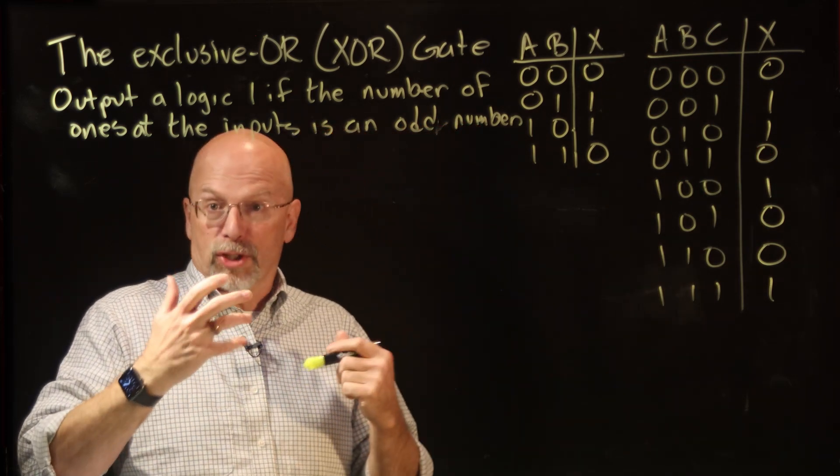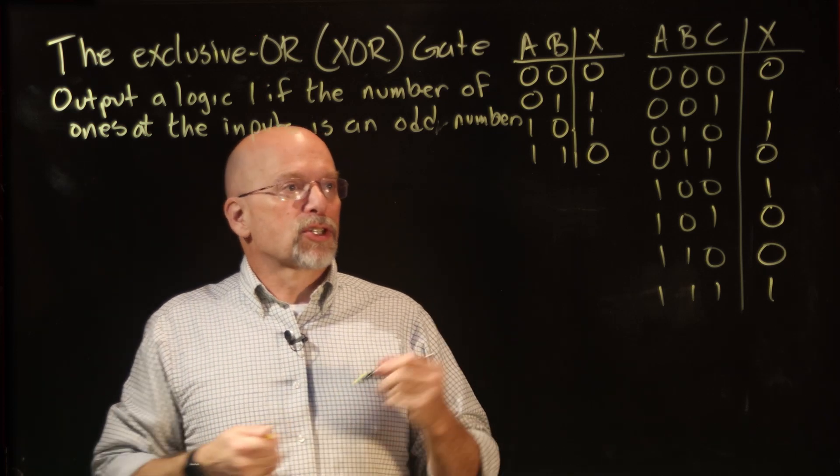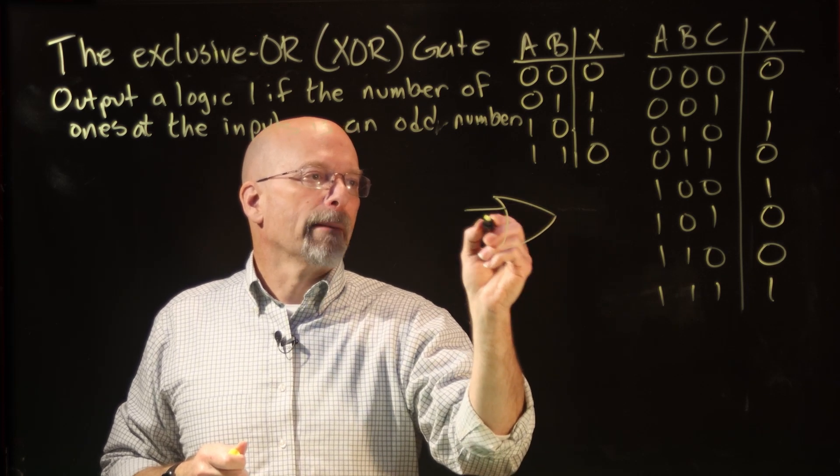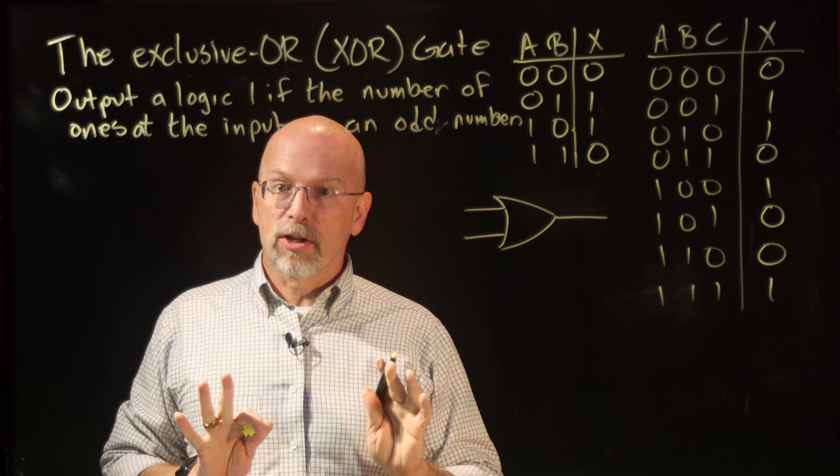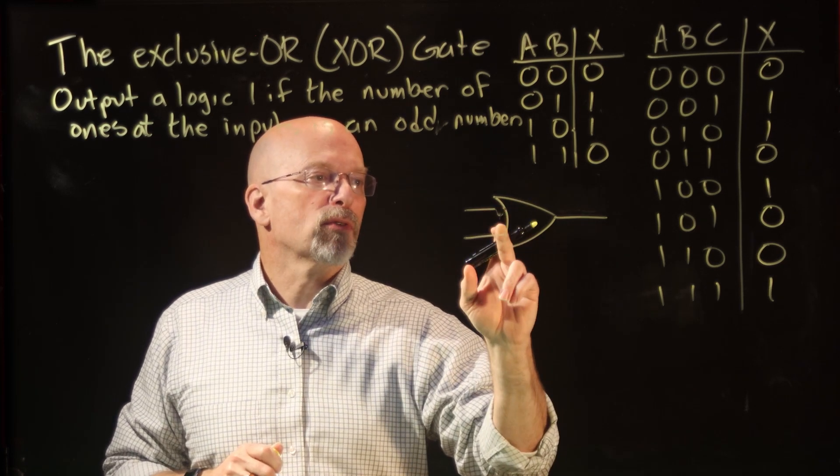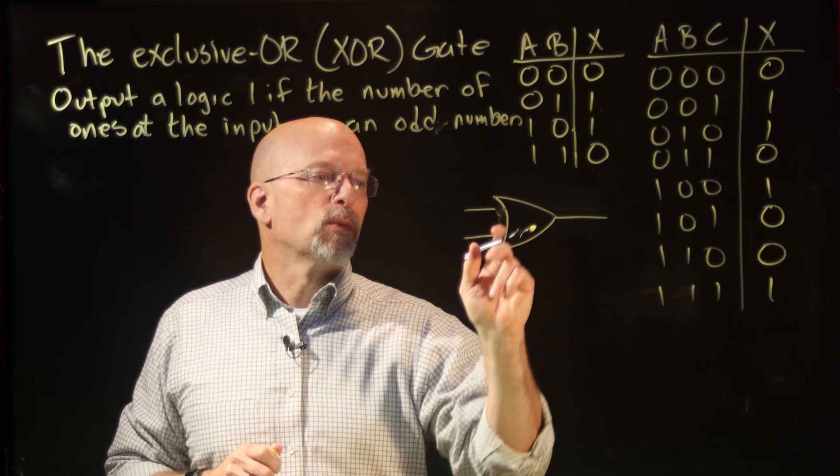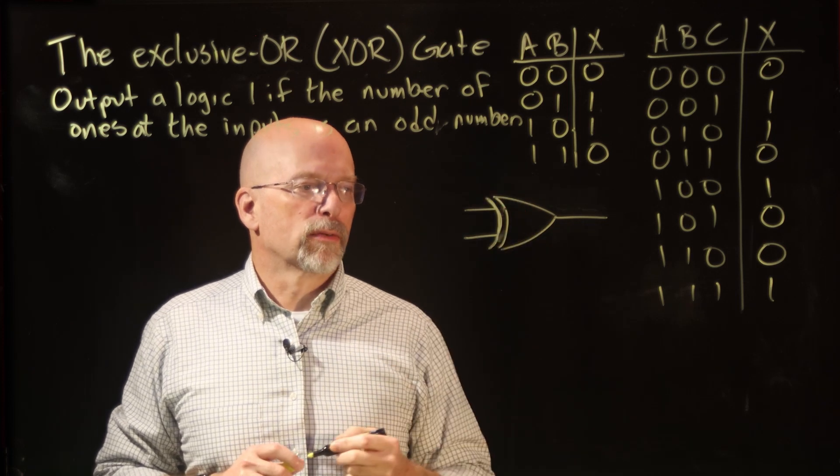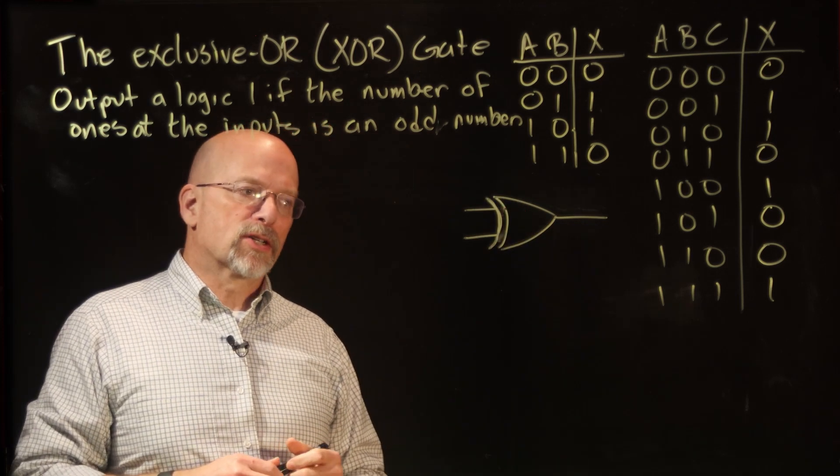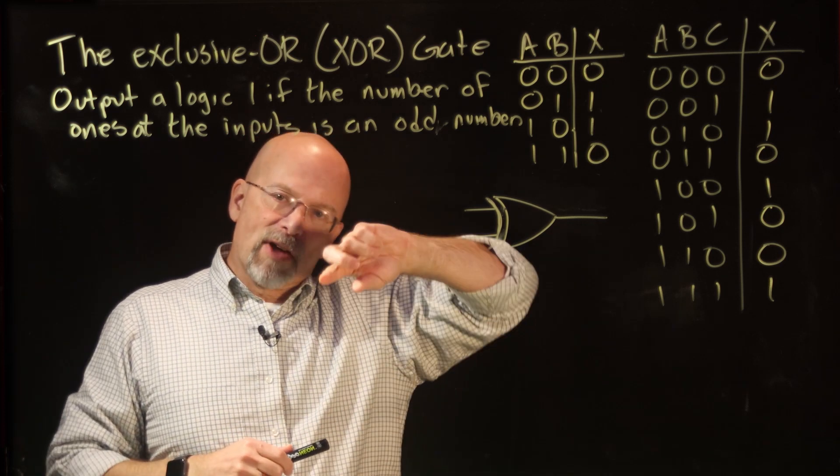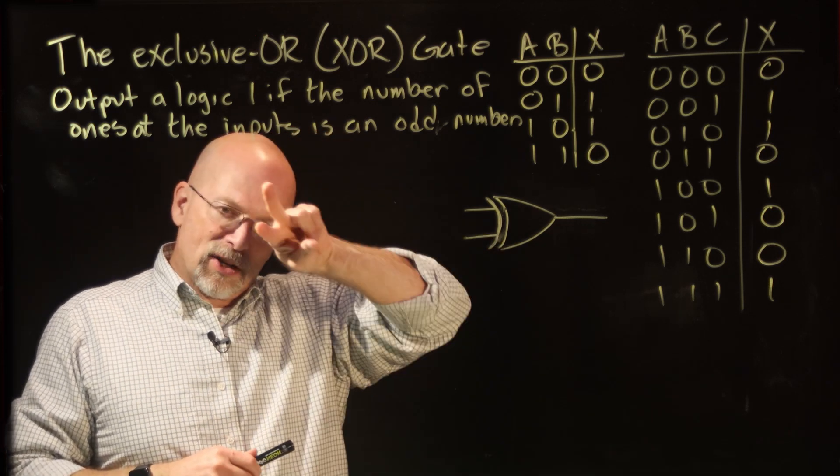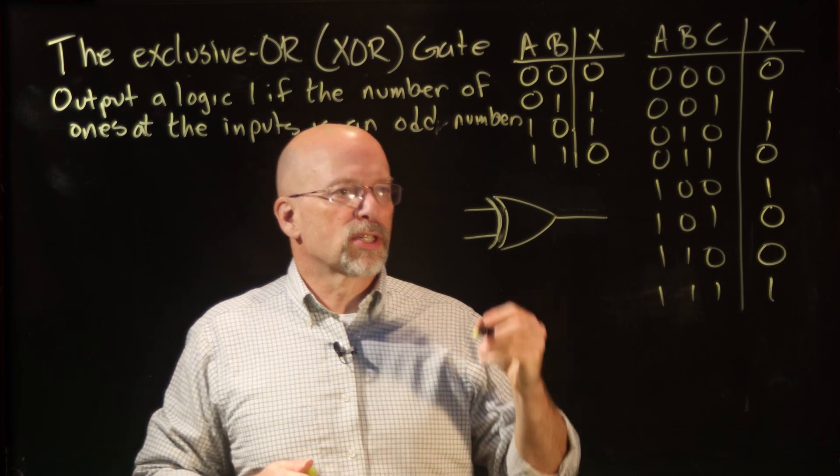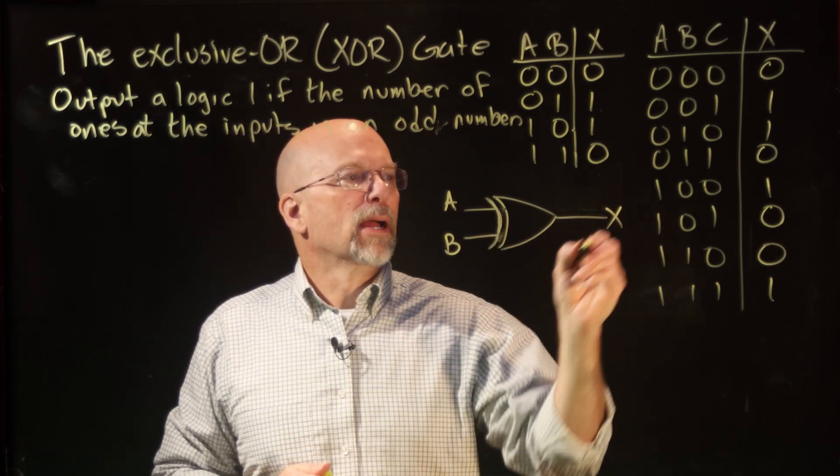What I'm going to do before I show you, I'll show you what the circuit symbol looks like. Remember our OR gate? Our OR gate had a curved input and a pointed output. That was our OR gate. Well, the exclusive-OR, instead of just having the one curved input line at the input, it has these two parallel curved inputs. That is the symbol for an exclusive-OR.